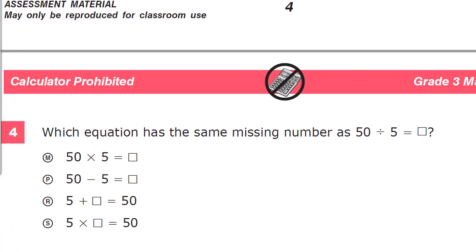This is the grade three math practice test for T and Ready. On this version of the test, this is question number four. Which equation has the same missing number as 50 divided by 5 equals missing number?